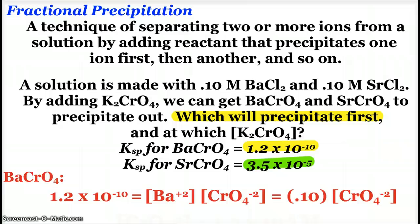So here is an example, a solution made with 0.1 molar barium chloride and 0.1 molar strontium chloride. If I would like to get the barium and strontium ions out, I could add potassium chromate, and I could get barium chromate and strontium chromate to precipitate out. So which one will precipitate first?